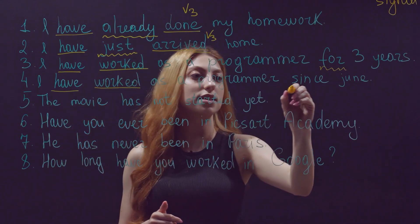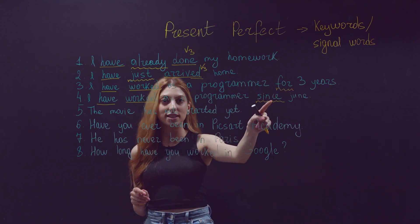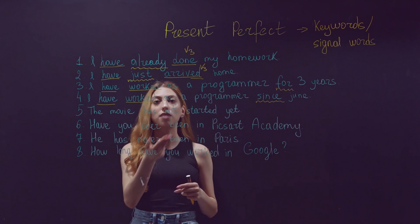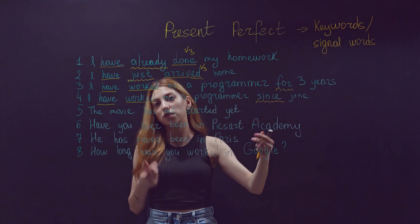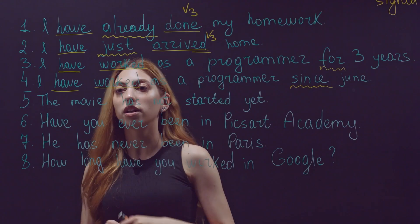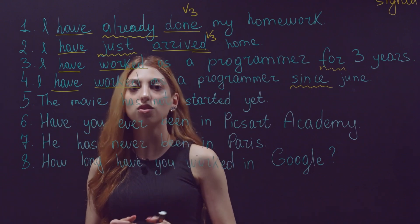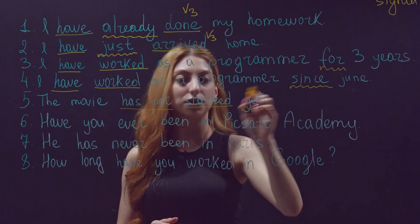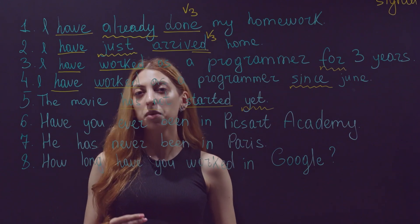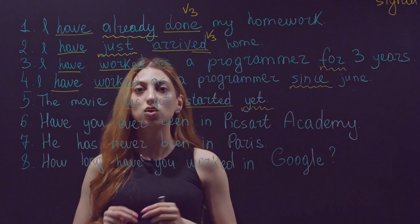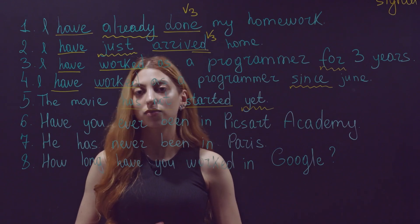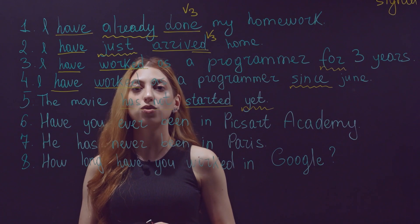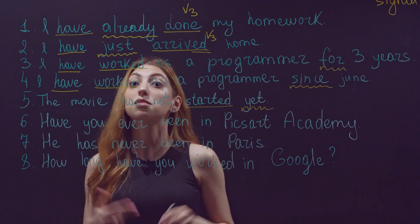Fourth example: 'I have worked as a programmer since June.' Structure: 'have + worked'. The keyword is 'since'. What is the difference between 'for' and 'since'? 'Since' is a point in time — that is to say, when your action started. So 'I have worked as a programmer since June' means I started working in June and I'm still working now. Fifth: 'The movie has not started yet.' The keyword is 'yet'. 'Yet' is used only in negative sentences or questions.